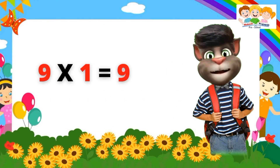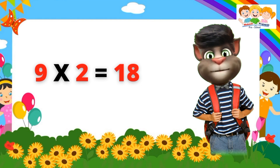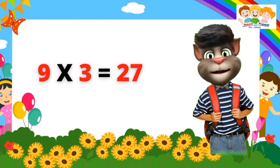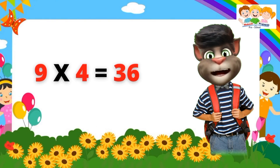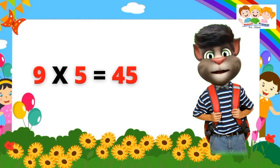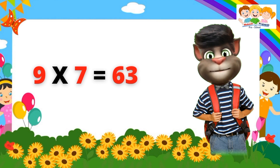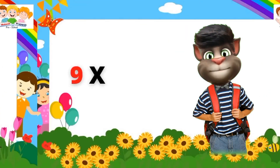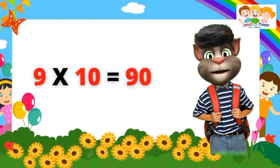Table of Nine. Nine one's are nine. Nine two's are eighteen. Nine three's are twenty-seven. Nine four's are thirty-six. Nine five's are forty-five. Nine six's are fifty-four. Nine seven's are sixty-three. Nine eight's are seventy-two. Nine nine's are eighty-one. Nine ten's are ninety.